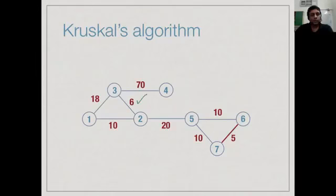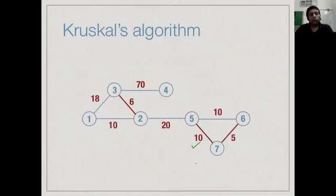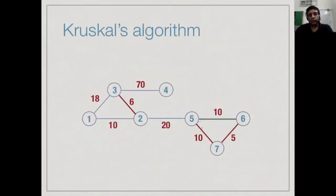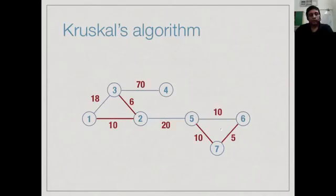The next edge is weight 6, so we add it to our tree. Now we must pick one of the edges labeled 10 — we can pick any one, so let us pick this one. We want to pick another edge labeled 10, but one of the remaining weight-10 edges forms a cycle, so we cannot add it and discard it. We go to the next weight-10 edge, and that one we can add.